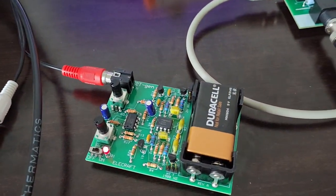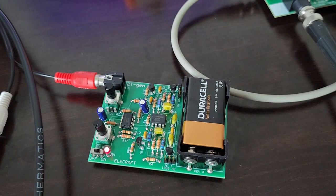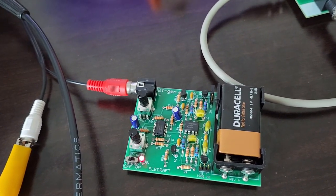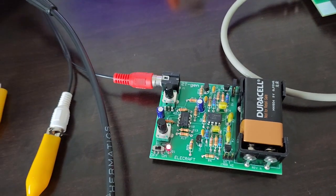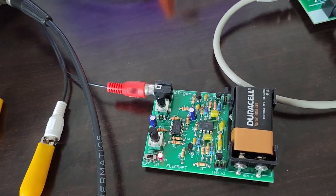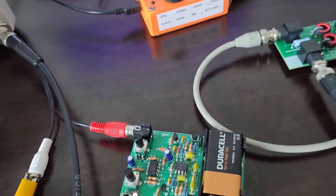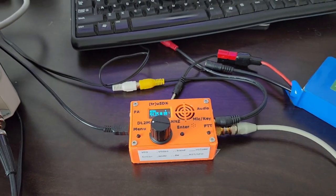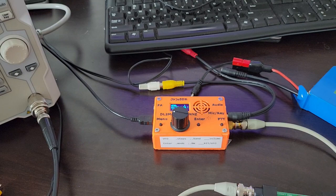I've also got Elecraft's two-tone generator here. It generates two tones, as its name implies, one at 700 hertz, one at 1,900 hertz. I can transmit those into the TruSDX either individually or at the same time. So first of all, let's have a look and see what they look like individually.